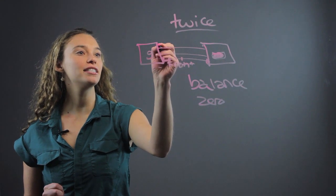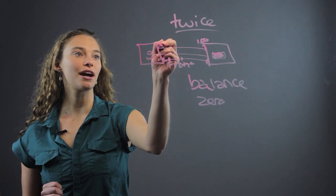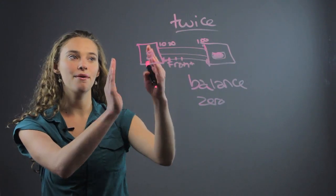The back one is to a hundred in ten gram increments. So it counts ten, twenty, thirty all the way to a hundred with ten grams.